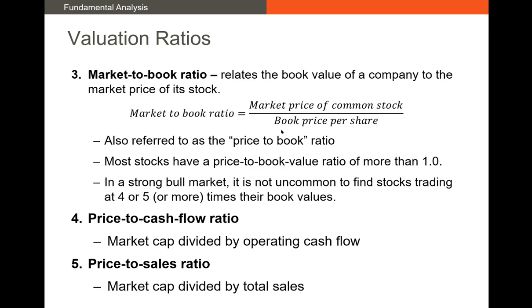There are other valuation ratios. The market-to-book ratio, or price-to-book, is market price per share divided by book price per share. Most healthy firms have a price-to-book ratio greater than one — the average is probably around 1.6 or 2. The price-to-cash-flow ratio is market cap divided by operating cash flow, or price per share divided by operating cash flow per share. It tells us how much investors are willing to pay for every dollar of operating cash flow — a high ratio indicates expected high growth opportunities.